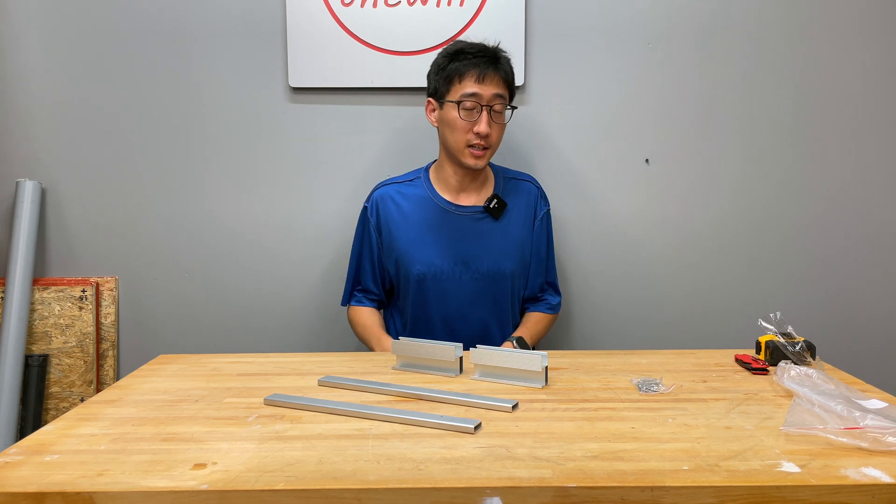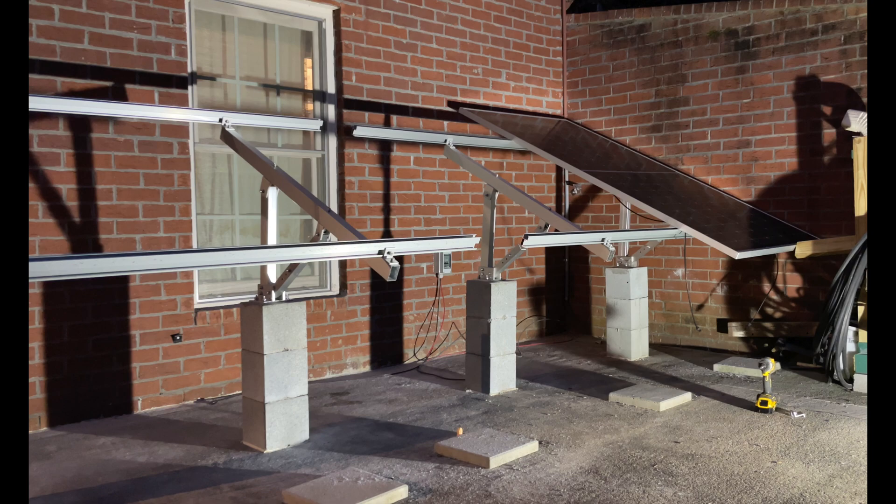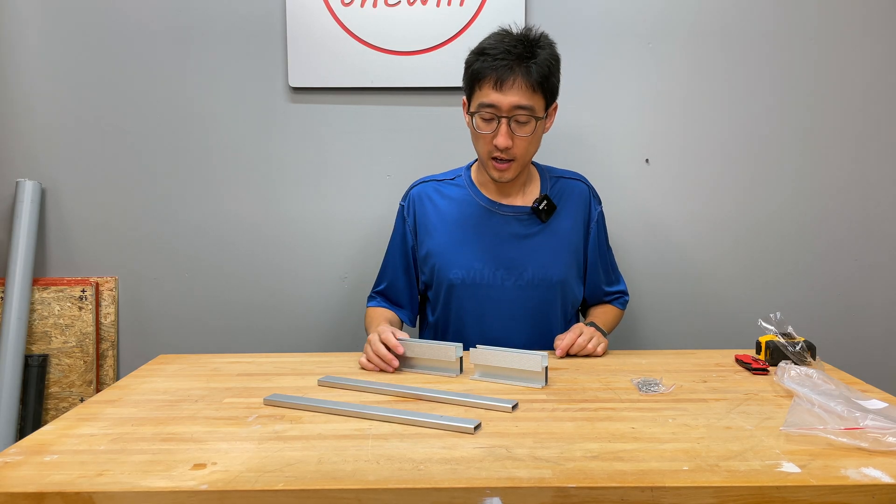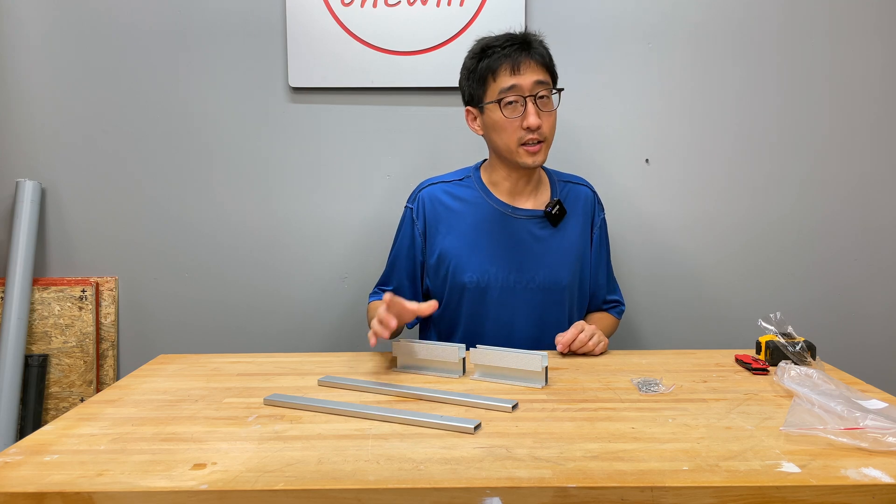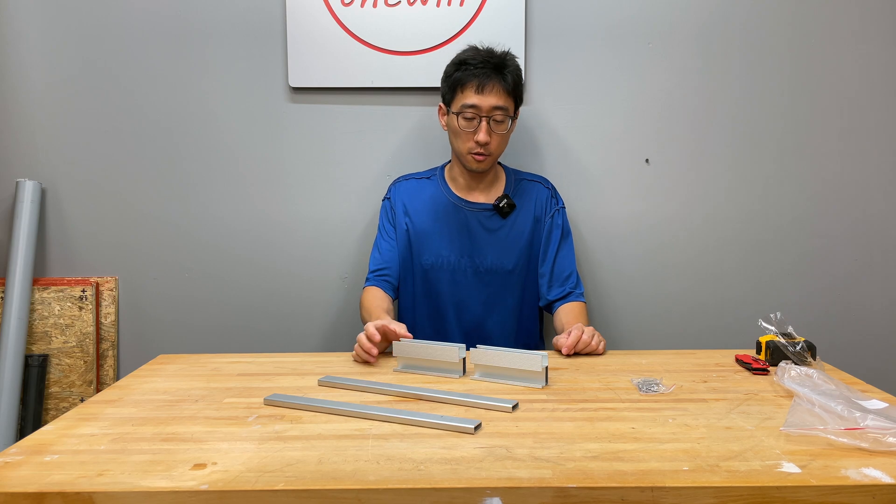So if you don't know what the EG4 Bright Mount system is, it's pretty much a ground mount system you can use to mount solar panels on the aluminum rails. But this right here is an extension kit and you may not need this or you may need this, depending on your solar panel size.